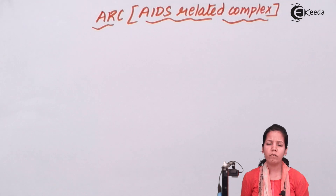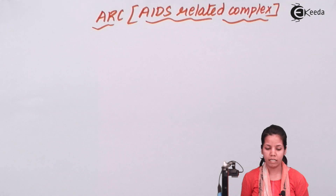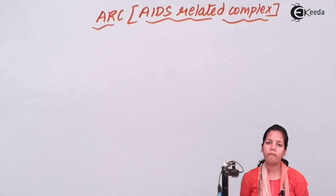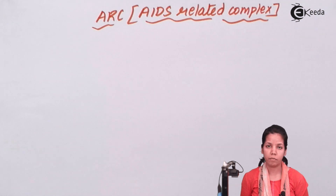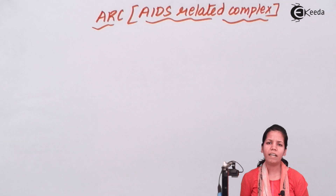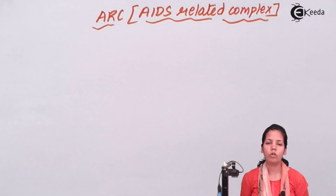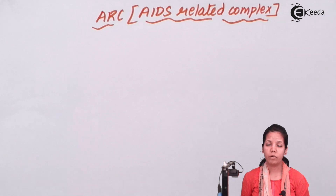One of the first confirmations of full blown AIDS or ARC is Wasting Syndrome — sudden drastic weight loss which is almost irreversible. Secondly, Kaposi Sarcoma: white-red color patches formed at the lower back of the body which are quite big and evident.